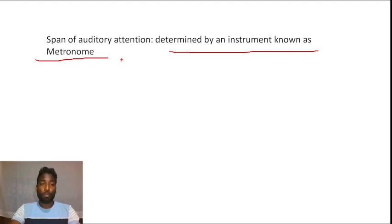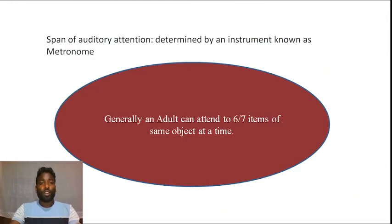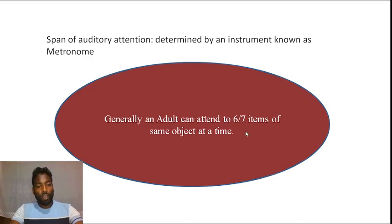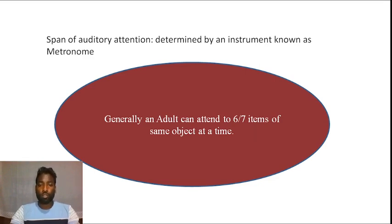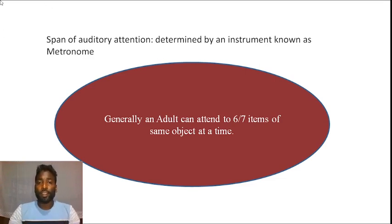Generally, an adult can attend to six or seven items of the same object at a time. So the span of attention for an adult is approximately six to seven items simultaneously.